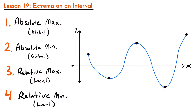Let's start with our absolute maximum — the point where our graph has the highest y-value. This graph is closed; it has two endpoints, so this function does not continue past those points. Looking at it, this point right here is the highest along the y-axis out of all possible points, so this is going to be our absolute maximum. The absolute minimum is the point with the lowest y-value, which would be this point down here.